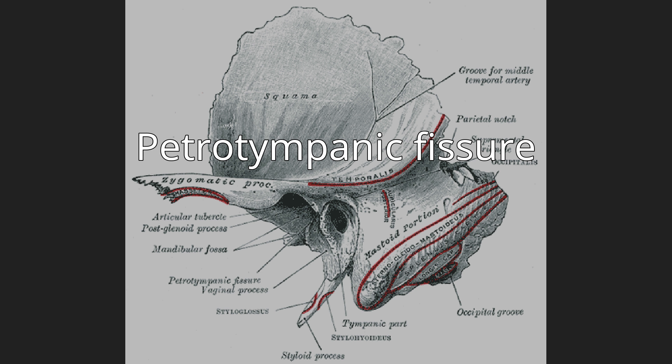The petrotympanic fissure, also known as the squamotympanic fissure or the Glaserian fissure, is a fissure in the temporal bone that runs from the temporomandibular joint to the tympanic cavity.